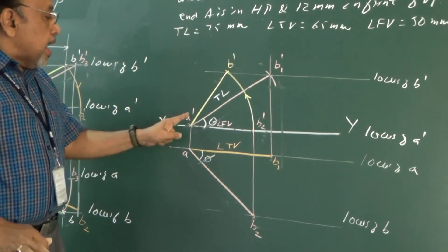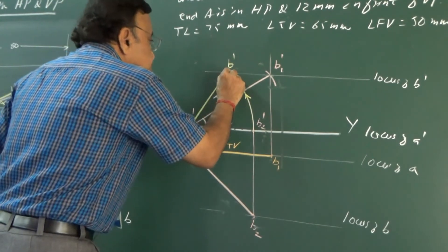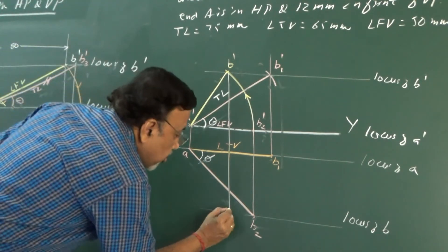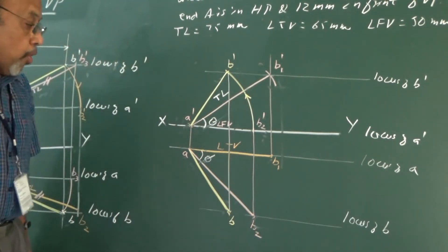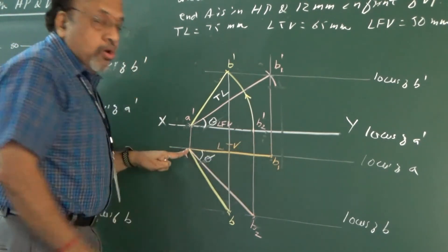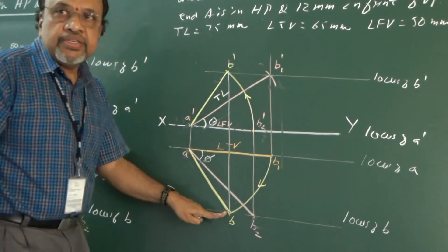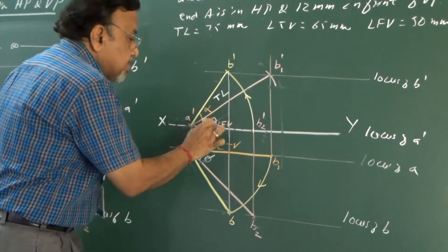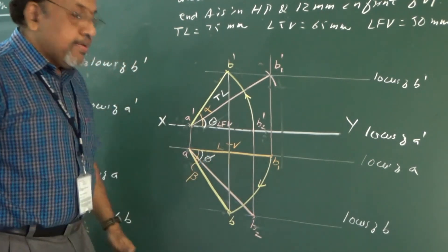For the final top view: A and A dash share the same projector, and B dash and B share the same projector. So I draw the projector through B dash to get point B. Joining A and B gives the final top view. If I have done the problem correctly, this length should equal LTV. Finally, you can see these angles: alpha is greater than theta, and theta is greater than phi.